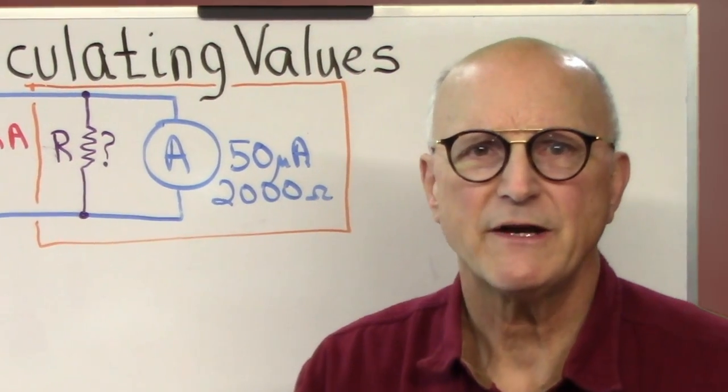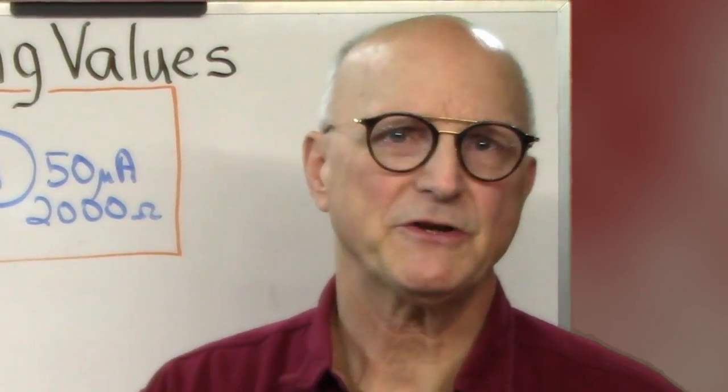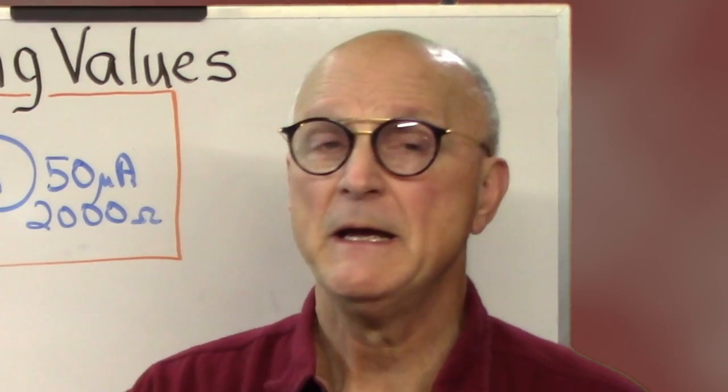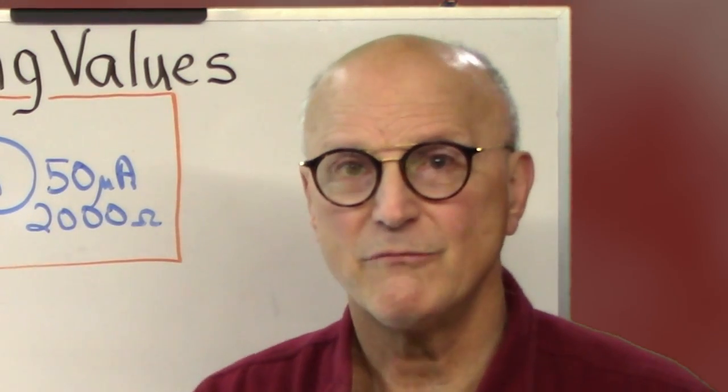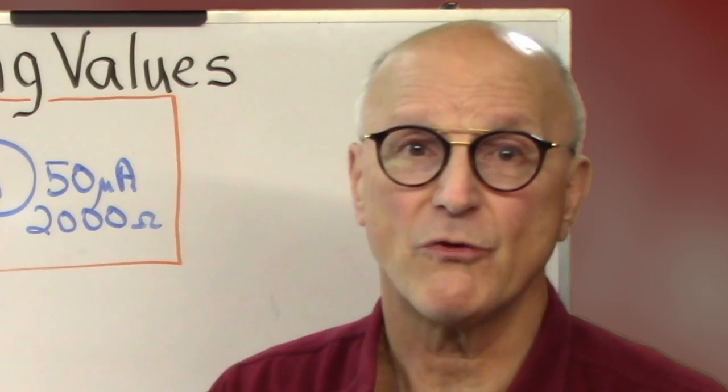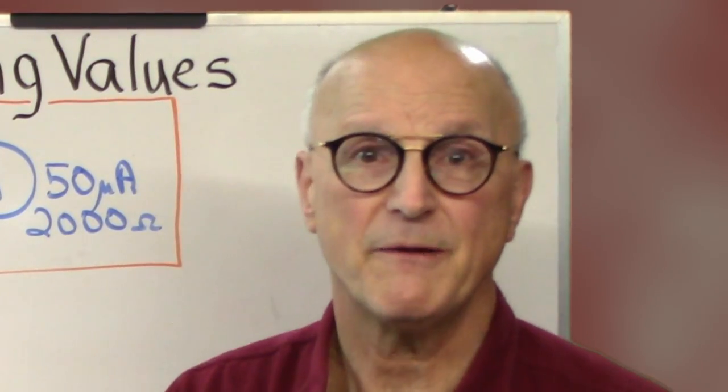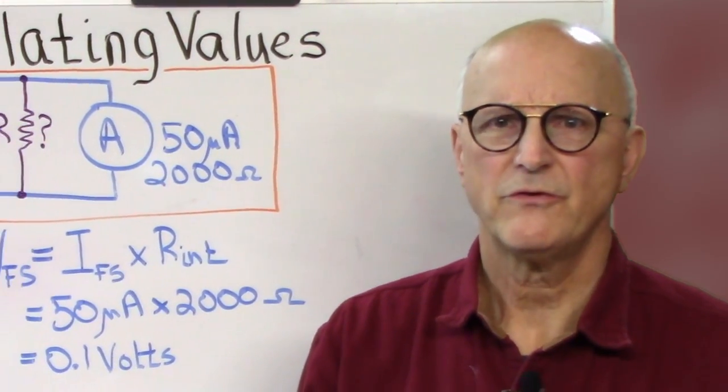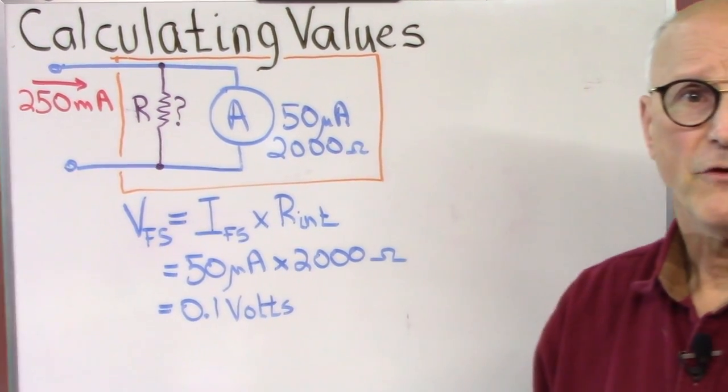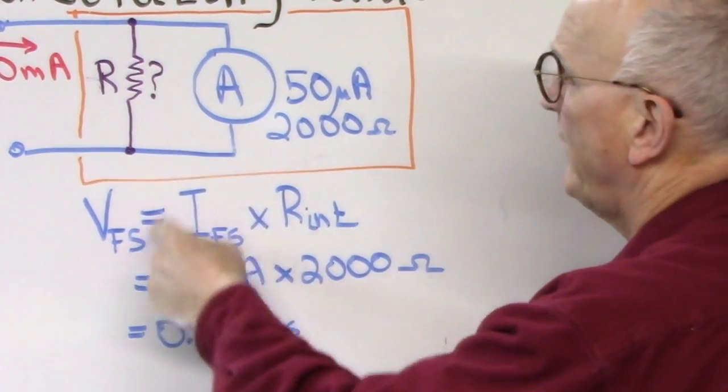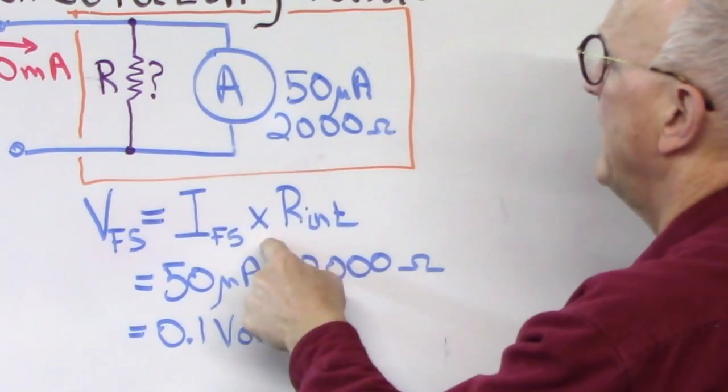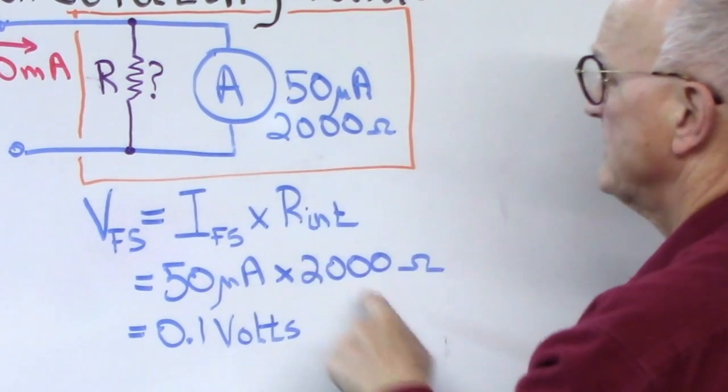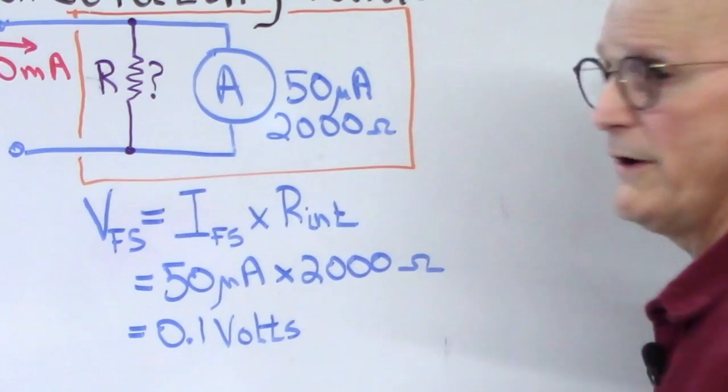Now the easiest way to figure out the needed value of this resistor is by calculating the voltage across the previously characterized meter at full scale. By definition the voltage across the meter movement and the voltage across the parallel resistor will be the same because they're in parallel. So when there is 50 microamps of current running through this 2000 ohm resistor, the voltage across the resistor would be the full scale current of the meter times the internal resistance of the meter gives us 50 microamps times 2000 ohms or 0.1 volts.